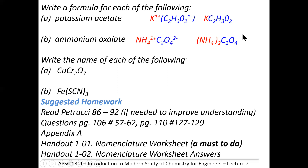For CuCr₂O₇: looking up copper — it can be plus one or plus two. Dichromate is minus two. Since there's only one copper, it must be plus two. We could call that copper(II) dichromate or cupric dichromate. For Fe(SCN)₃: thiocyanate charge is minus one; with three thiocyanates giving minus three, iron's charge must be plus three. We could call it iron(III) thiocyanate or ferric thiocyanate.